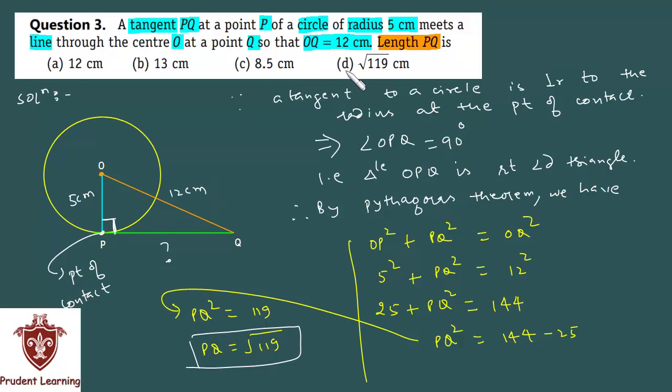So PQ equals √119 cm. Option D is our correct answer. This completes our solution. Let us now move on to the last question of the exercise.